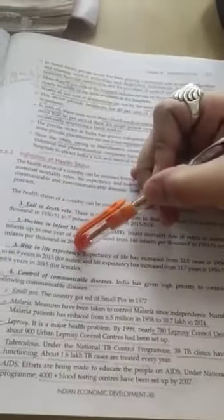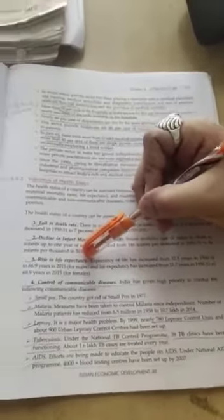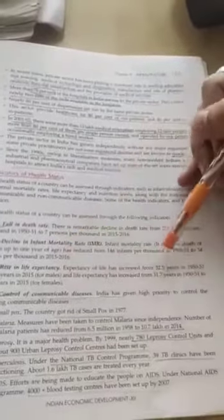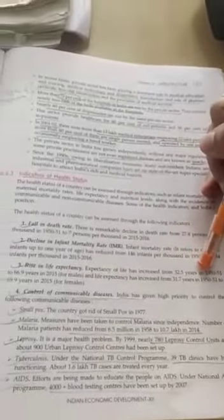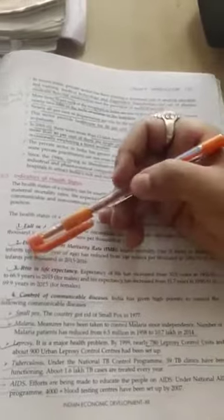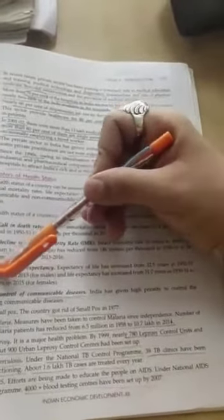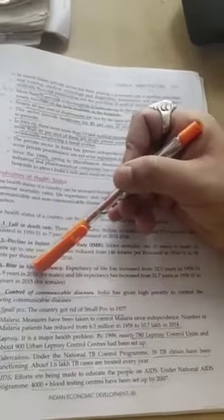Rise in life expectancy. The age of life has increased. The first time it was 32.5 years or 40 years, but now it is 66.9, you can say it is 67 for males and for females it has been 70 years.